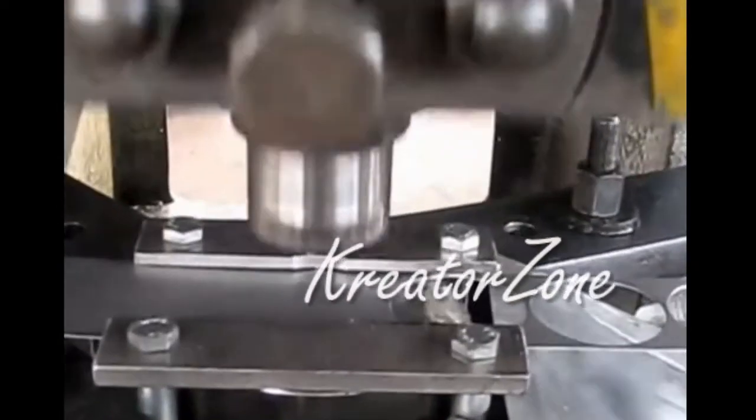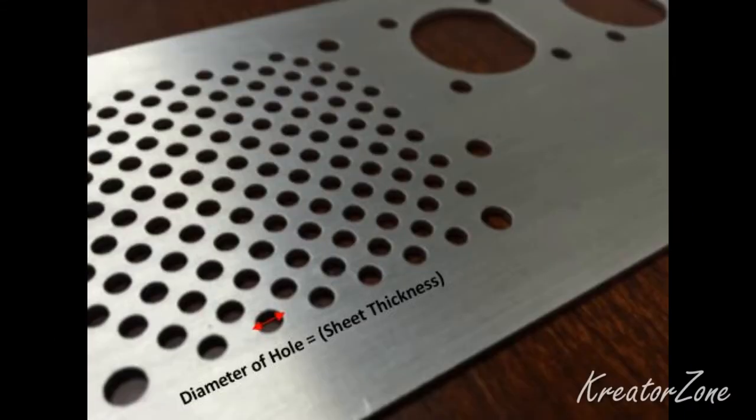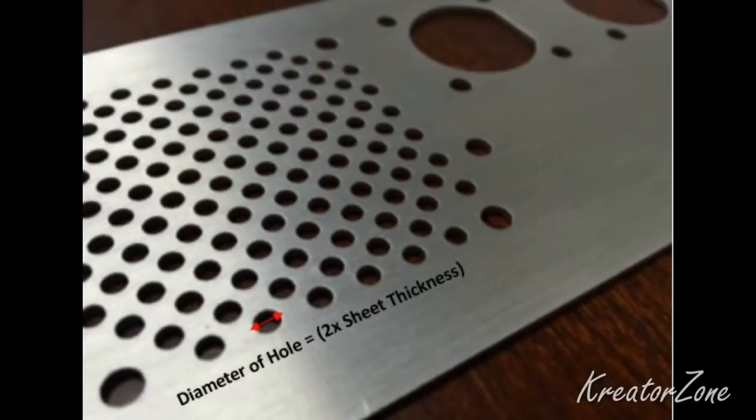The diameter of the hole in sheet metal part should not be very small. Small holes are created by piercing operation and for manufacturing small holes, small sized punches are required. Small hole size in sheet metal requires smaller size punching tool which may lead to breakage during the operation. For softer materials, recommended minimum hole diameter is equal to sheet thickness, whereas for harder materials recommended minimum hole diameter is equal to two times the sheet thickness.